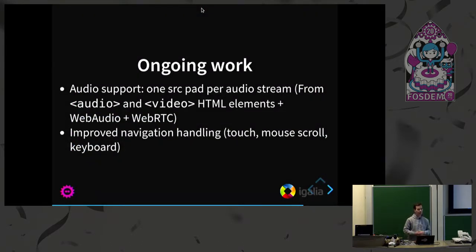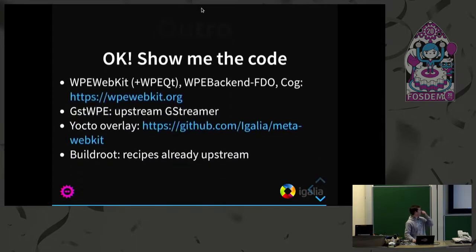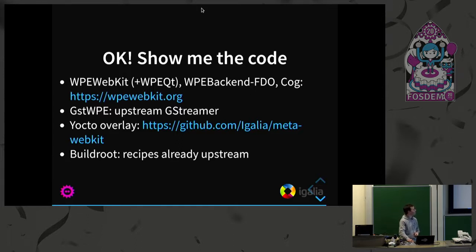Some ongoing work on that plugin includes adding audio support — I have a prototype already and need to upstream it — and modernizing navigation events in GStreamer, mainly adding mouse cursor support and improving keyboard support. The code is at wpe-webkit.org, Yocto layer support is upstream in Buildroot, and it's been working well on i.MX6 and i.MX8M platforms with Raspberry Pi 3 and 4. It's already deployed in the wild.